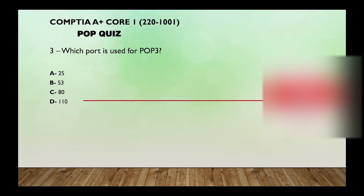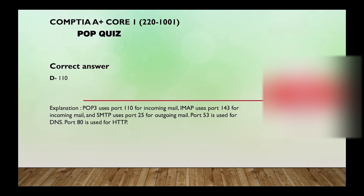Question three: which port is used for POP3 — 25, 53, 80, or 110? The correct answer is 110. POP3 uses port 110 for incoming mail. IMAP uses port 143 for incoming mail, SMTP uses port 25 for outgoing email, port 53 is used for DNS, and port 80 is used for HTTP.